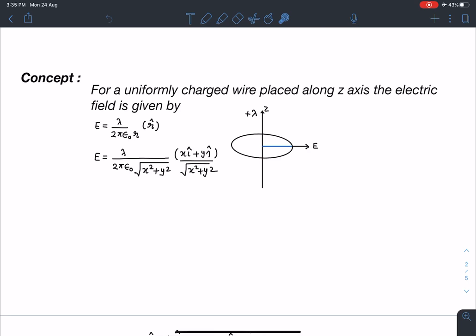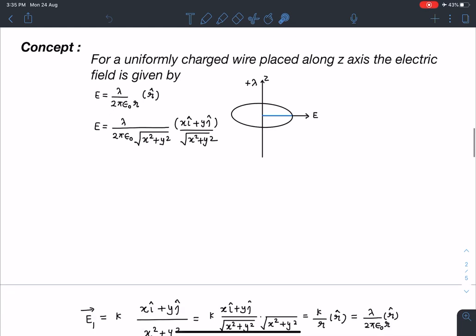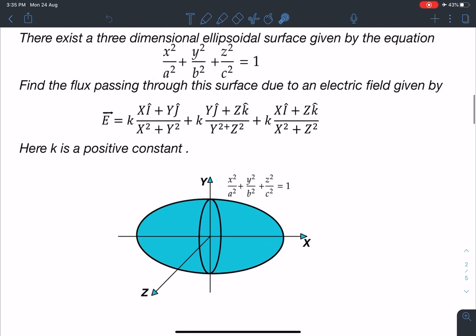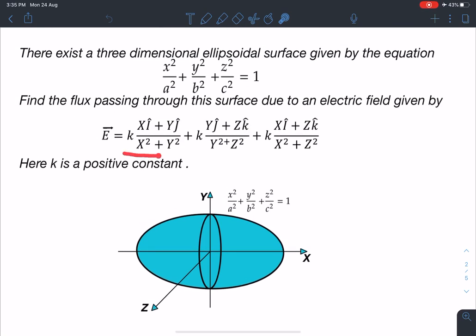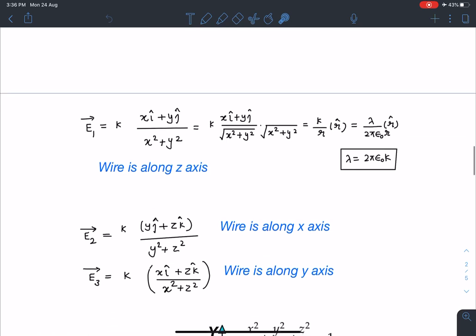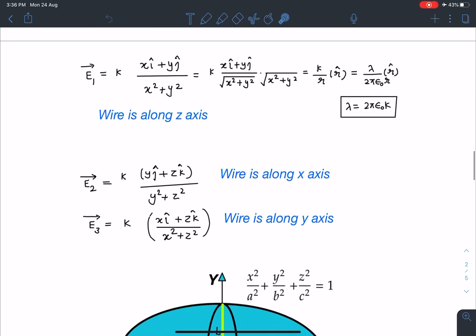So let's discuss this concept in this problem and we are going to use this concept in this question. So here this electric field I am breaking into three parts vector e1 vector e2 and vector e3. So here you can see vector e1 I can write it as k times xi plus yj divided by x square plus y square. So I am writing it in this form just now where I have shown you in the concept part also.